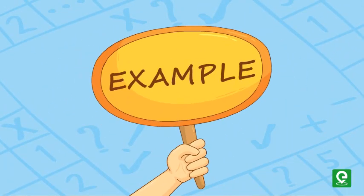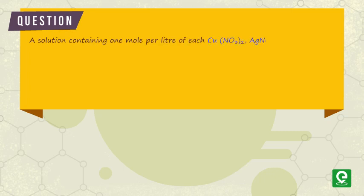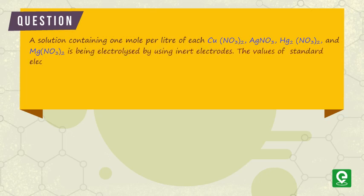Let's move on to a slightly difficult example to understand this concept better. Question: A solution containing one mole per liter of each Cu(NO₃)₂, AgNO₃, Hg₂(NO₃)₂, and Mg(NO₃)₂ is being electrolyzed by using inert electrodes. The values of standard electrode potentials in volts (reduction potential) are given.